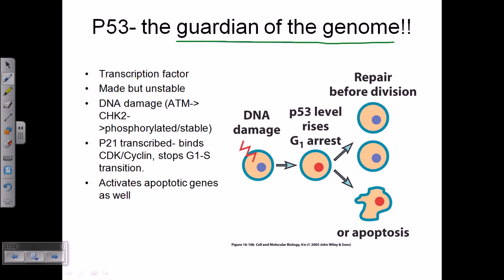When any damage happens inside the DNA, P53 senses it and P53 levels inside the body rise. This rise in P53 level helps in the G1 arrest of the cells — P53 recruits other proteins which signal the cell to arrest its cell cycle at the G1 stage. So the cell is not able to progress from G1 phase to S phase due to this increased P53 level.